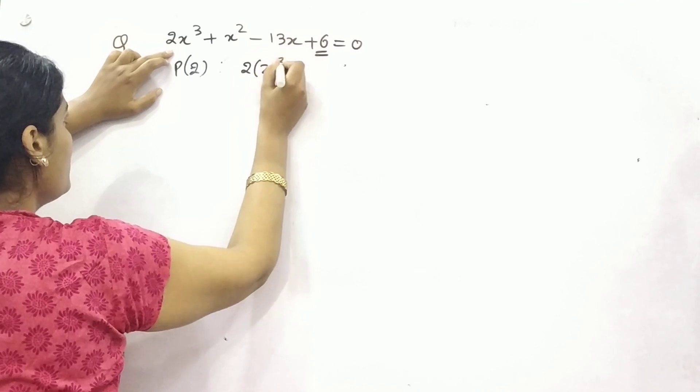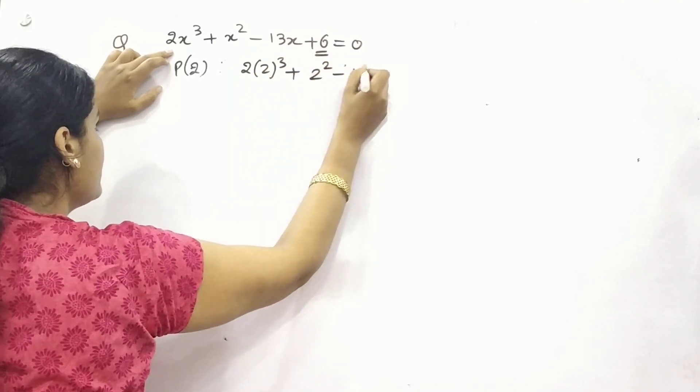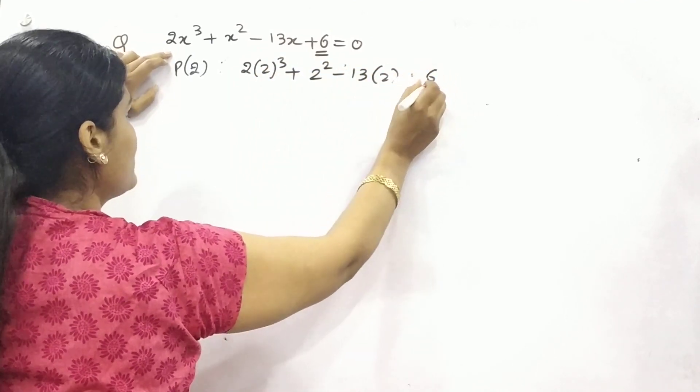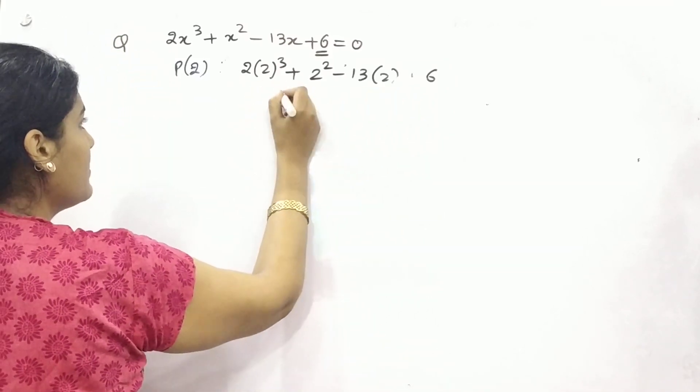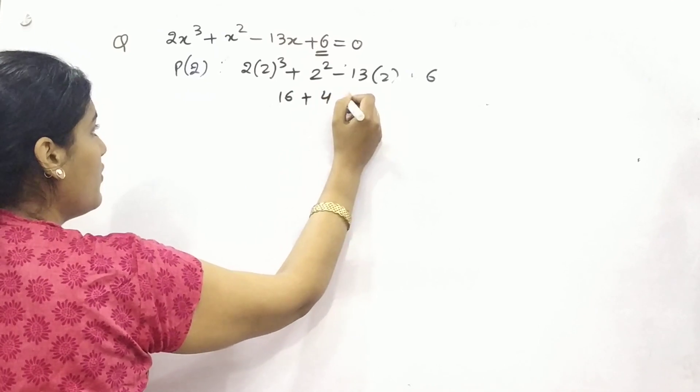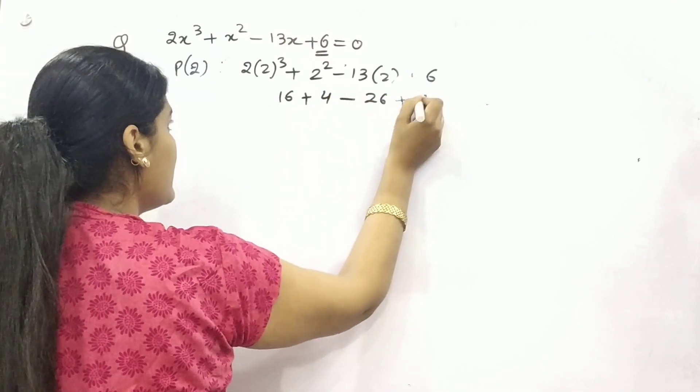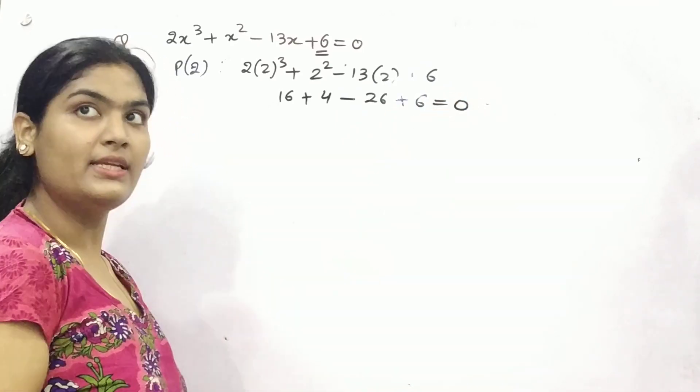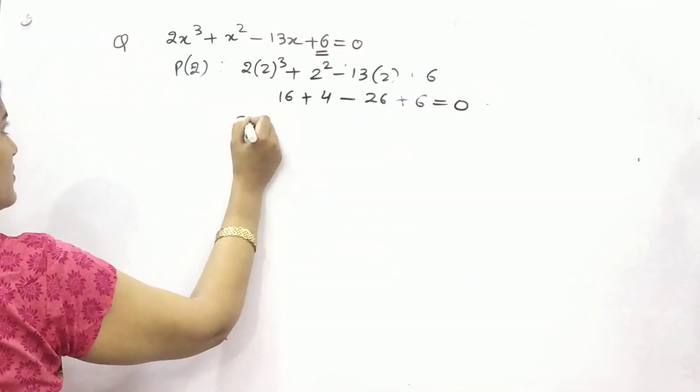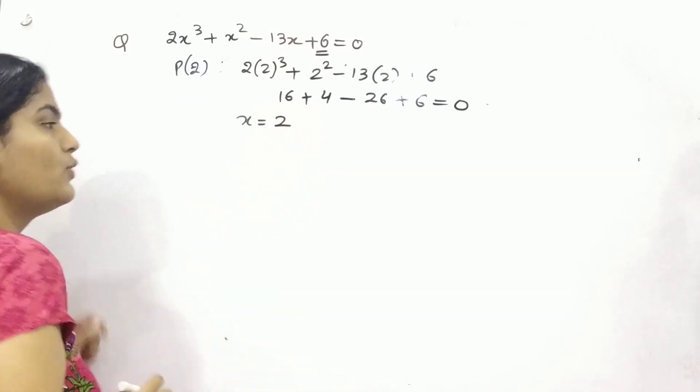2 cube, 2 square, 13 times 2 is 26. So 8 to the 16, 2 to the 4, 26 plus 6. So this is 26 minus 26, 0. That means x equals 2 is your root.